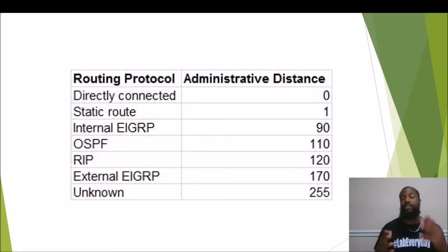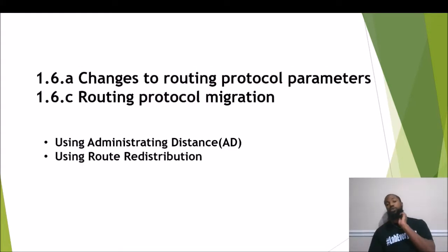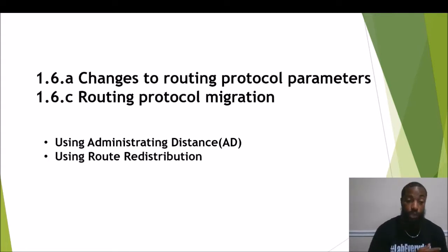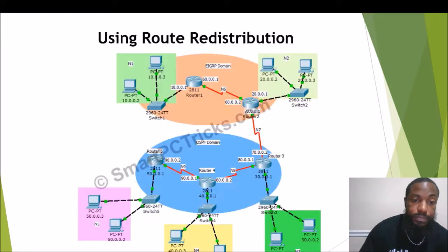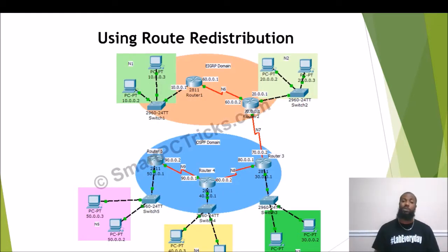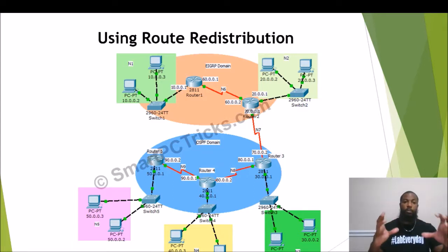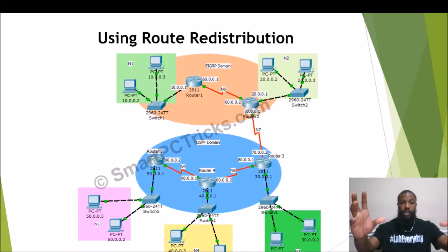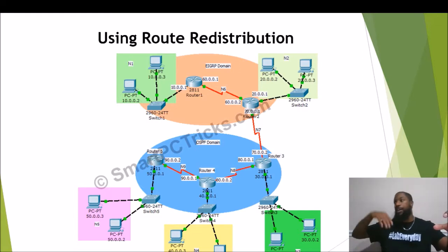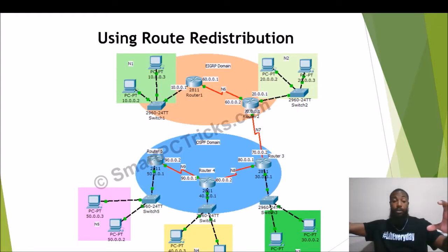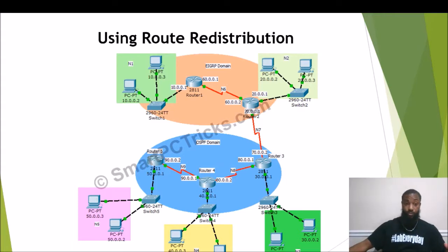Another thing you can do when making routing changes is route redistribution. Looking at this topology: on top you have the orange EIGRP domain, and at the bottom an OSPF domain. Let's say your company was originally running EIGRP, but you acquired another company that was running OSPF.